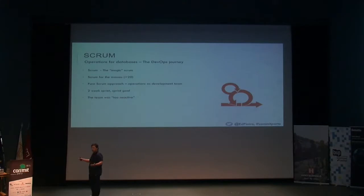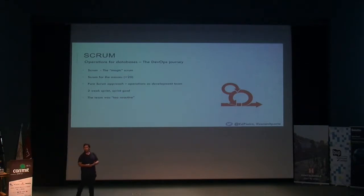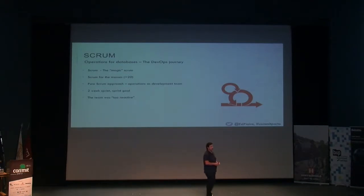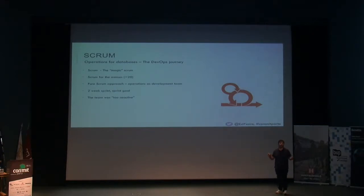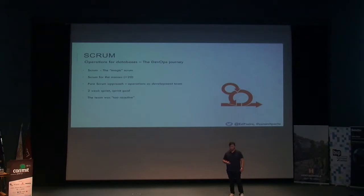But the first question was: so what do we need to do? And okay, let's look at the Scrum guide. And we put operations to do pure Scrum. So we had two-week sprints, we had the sprint goal. But the operations team was too reactive, because we had to take care of fires that happen in production. At the same time, we are doing Scrum and we had a sprint goal. So this was kind of strange for us.